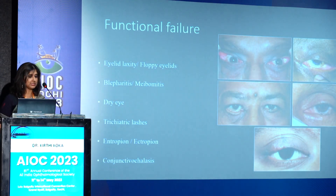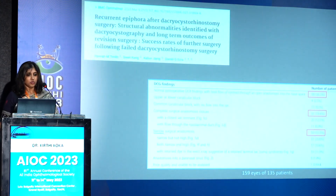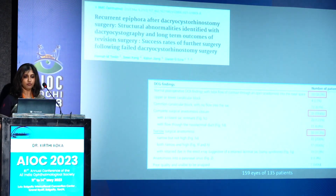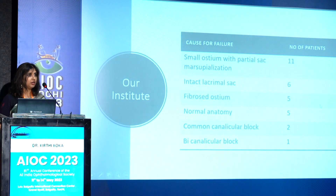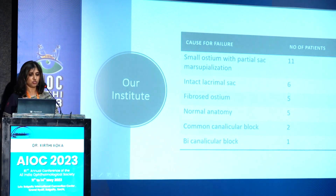Functional causes could be lid laxity, floppy eyelids, ectropion, conjunctivochalasis, all of which cause watering. A study of 159 eyes in 135 patients found that functional failure was the most common at 58%, followed by narrow ostium in 50 cases and completely closed ostium in 31. At our institute, studying 30 consecutive cases, a small ostium was the most common finding; in six cases the sac was not open at all — intact sac; five had a fibrosed ostium; and smaller numbers had canalicular blocks.